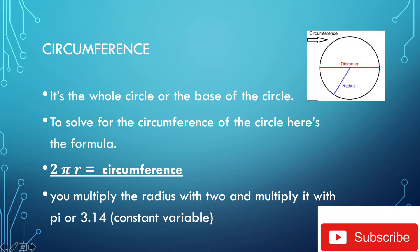To solve for the circumference of the circle, here's the formula: 2πr equals the circumference. You multiply the radius with 2 and multiply it with pi, or 3.14. Pi is equal to 3.14 and it never changes.